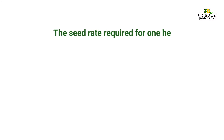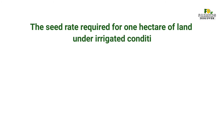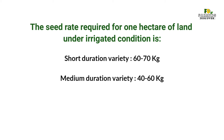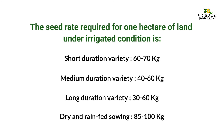The seed rate required for 1 hectare of land under irrigated conditions: Short duration variety — 60 to 70 kg; Medium duration variety — 40 to 60 kg; Long duration variety — 30 to 60 kg; Dry and rain-fed sowing — 85 to 100 kg.